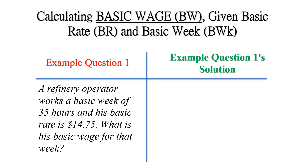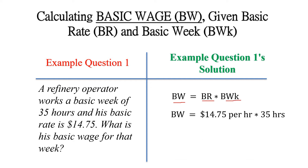Here's an example. A refinery operator works a basic week of 35 hours and his basic rate is $14.75. What is his basic wage? Basic wage equals basic rate times basic week, so that is $14.75 multiplied by 35, which gives us $516.25.